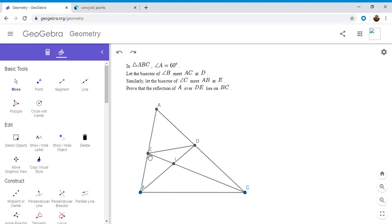In fact, this is the only place where we use that angle A is 60 degrees. We can show that AEID is cyclic by an angle chase. We want to show that angle EID is 120. Angle EID equals angle BIC, which is 180 minus IBC minus ICB. But IBC is half angle B and ICB is half angle C. Angle B plus C have to add up to 120 because angle A is 60.